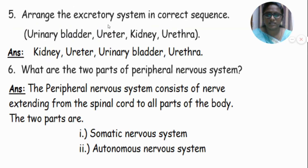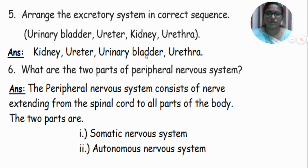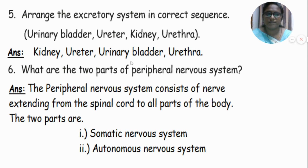Arrange the excretory system in correct sequence. Given: urinary bladder, ureter, kidney, urethra. Answer: kidney, ureter, urinary bladder, and urethra.